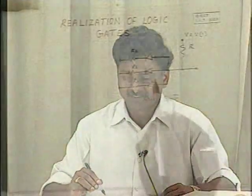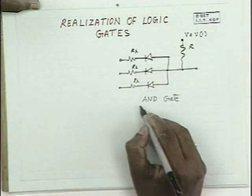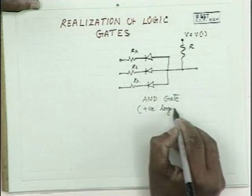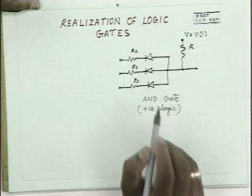Let us discuss some of these realizations. The simplest of them is diode logic. Please look at this diagram — this is an AND gate realized using diodes for positive logic. It is a three-input AND gate.